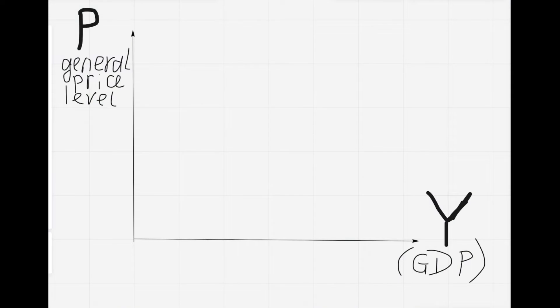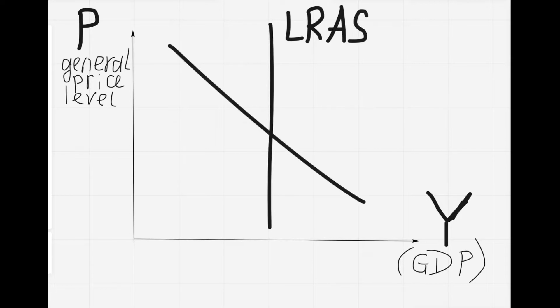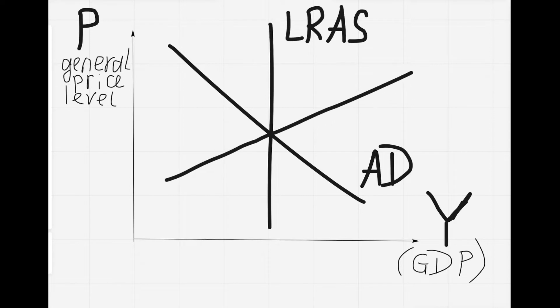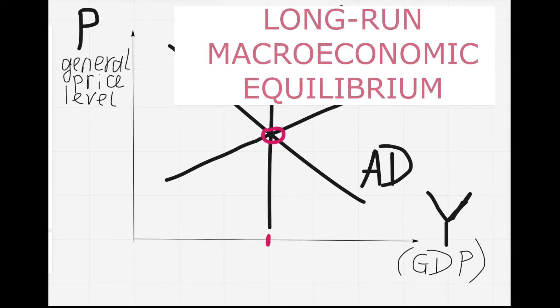This is the ADAS model. It's about the general price level versus the gross domestic product, GDP. It's about three curves: first, the long-run aggregate supply is a vertical line; second, aggregate demand slopes down; and third, the short-run aggregate supply slopes up. When all curves intersect each other at the same point, that point is called the long-run macroeconomic equilibrium.